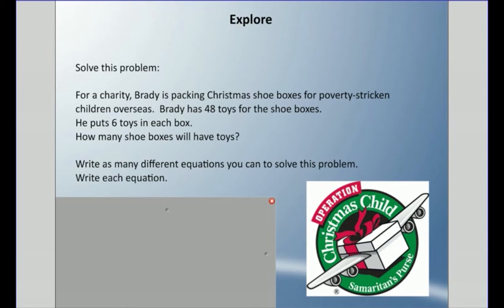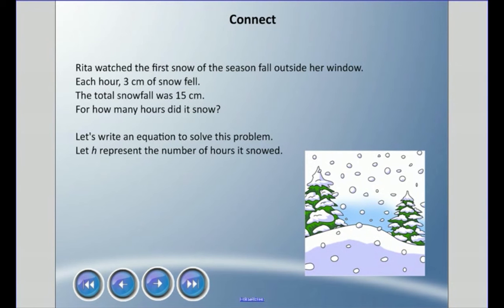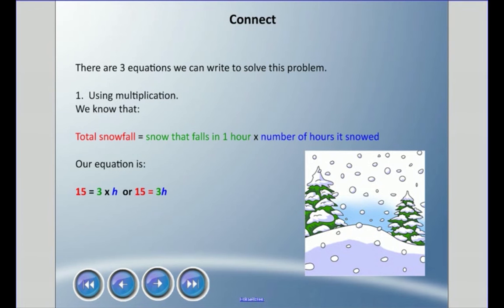Rita watched the first snow of the season fall outside her window. Each hour, three centimeters of snow fell. The total snowfall was 15 centimeters. For how many hours did it snow? We're going to write an equation to solve this problem and we're going to use H to represent the number of hours that it snowed.